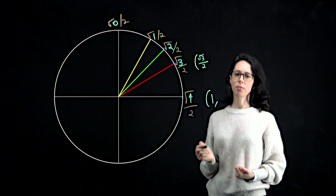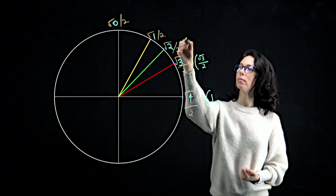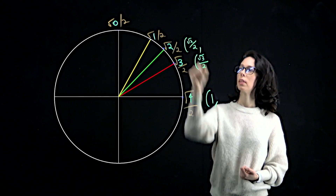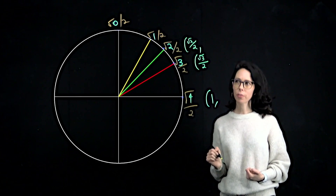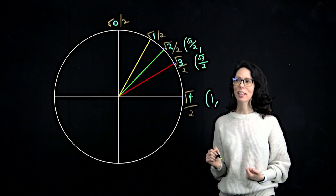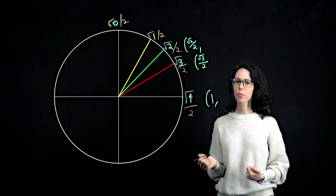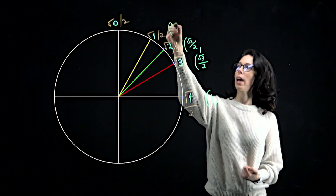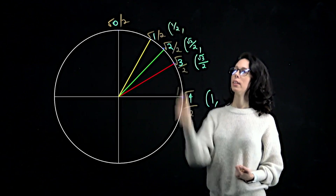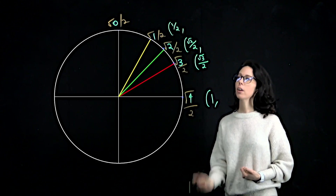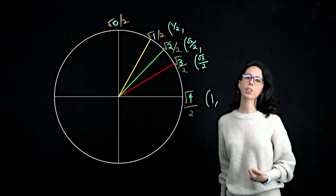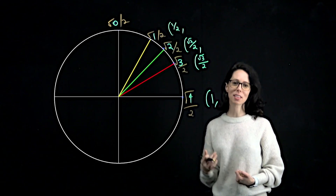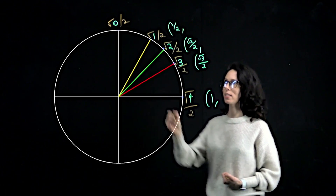At pi over 4, it's square root of 2 over 2. At pi over 3, it's square root of 1 over 2, but square root of 1 is just 1, so let's call that 1 half. And then cosine of pi over 2 is 0, because we are 0 units left or right on the x-axis.